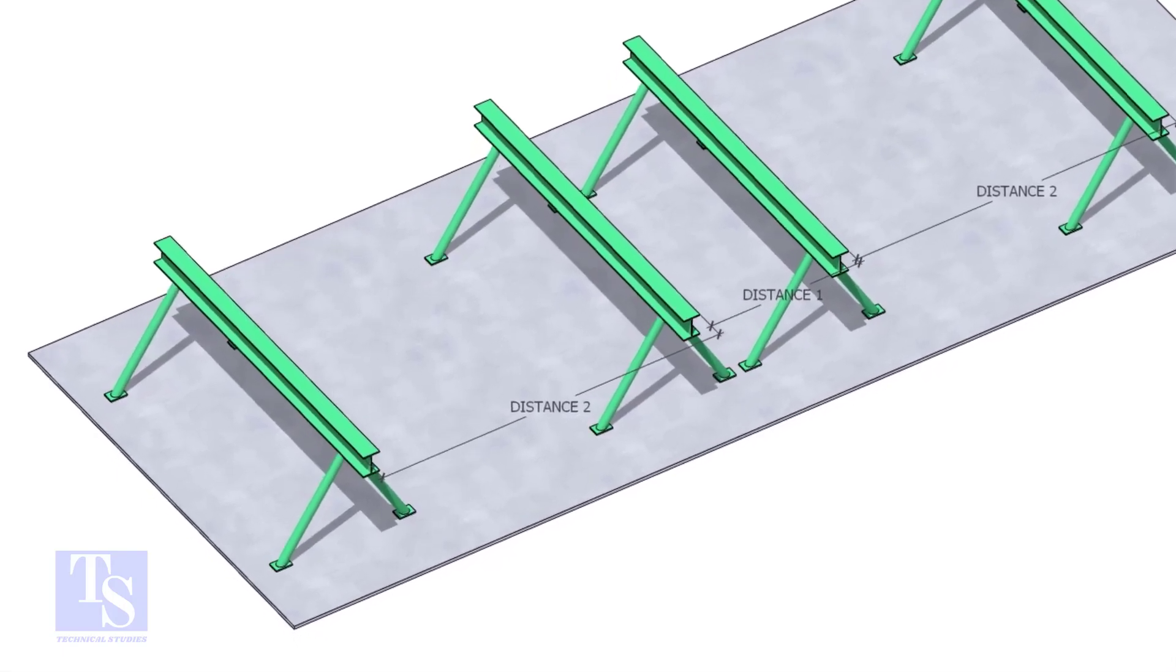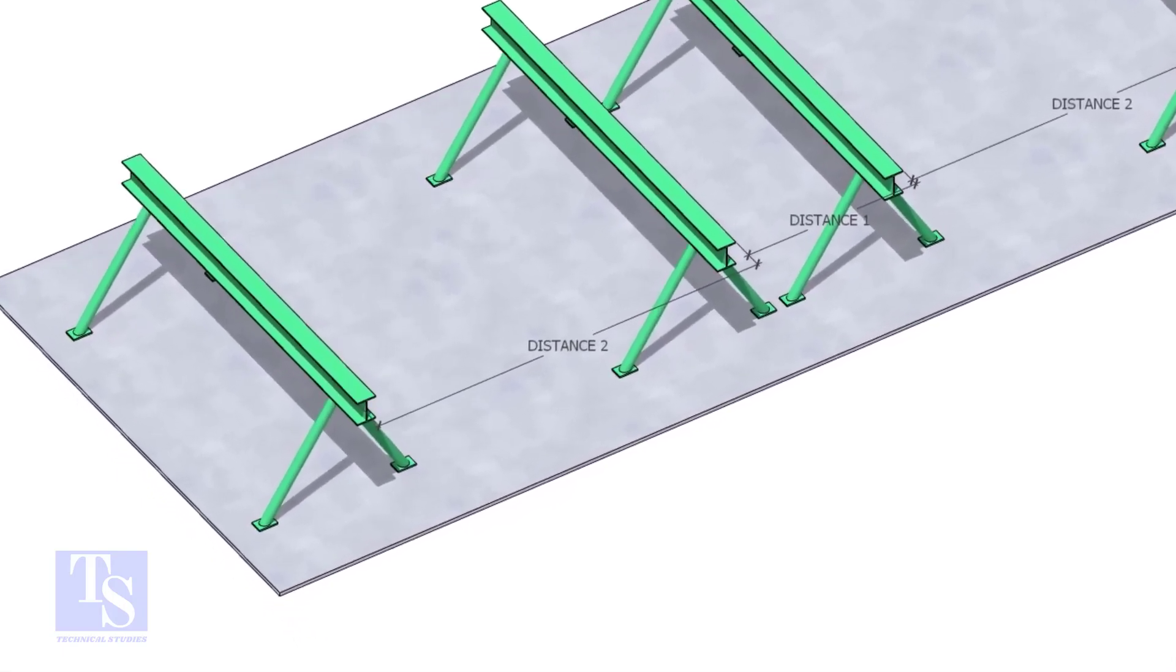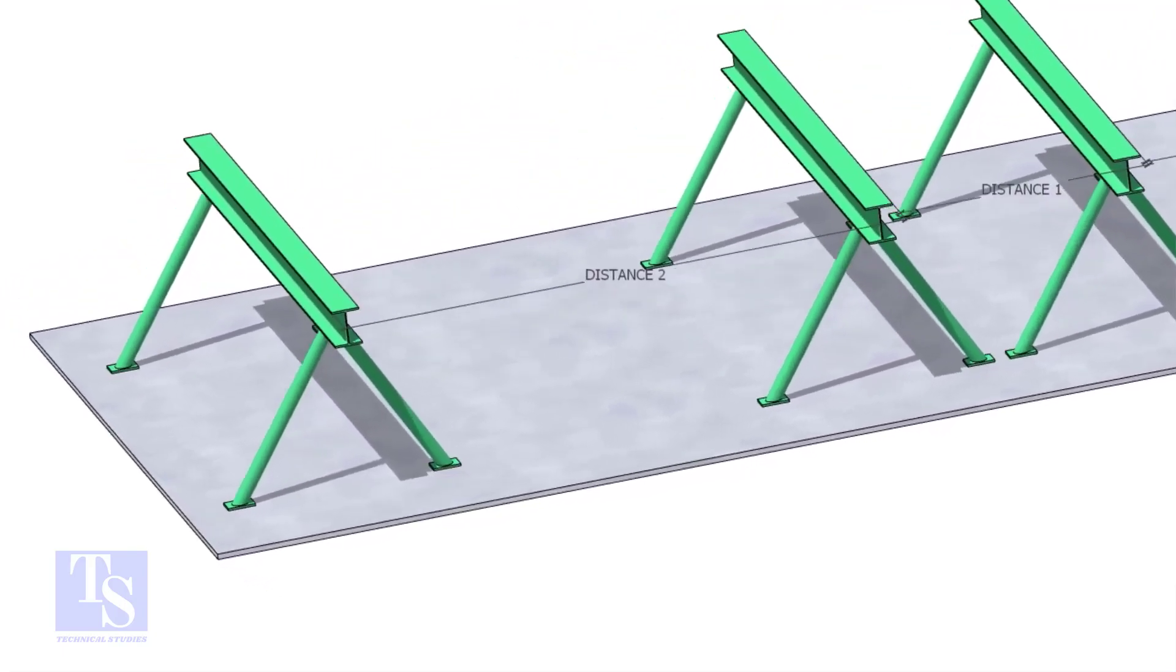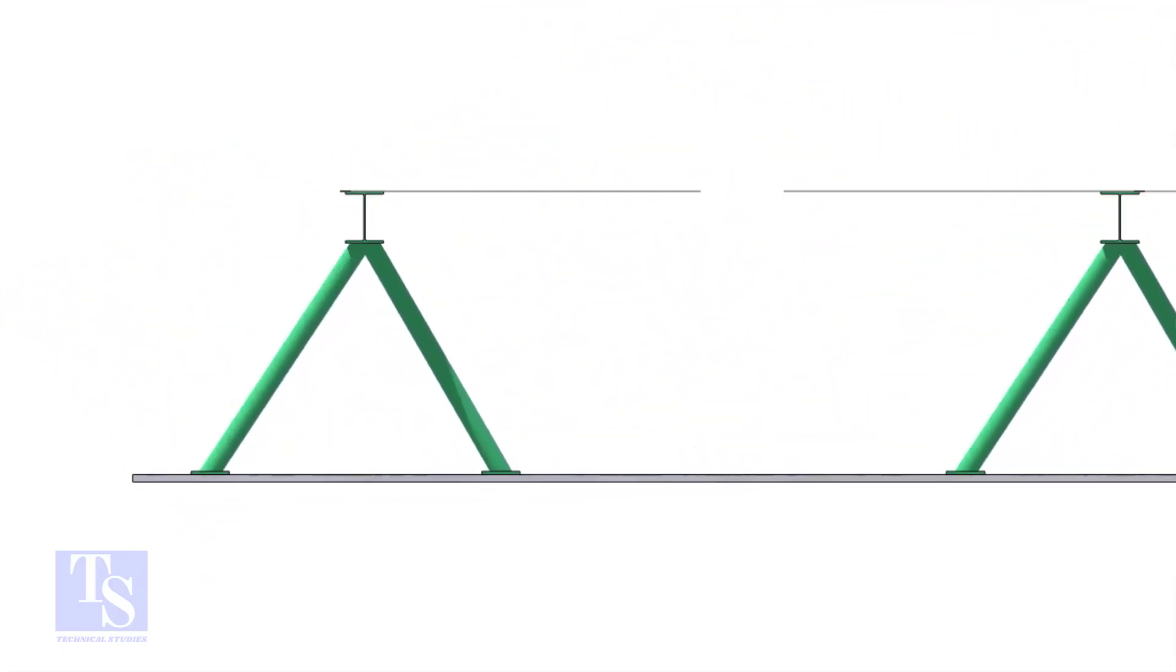Distance 1 shall be 1 meter to 1.2 meters. Distance 2 shall be 2 to 2.5 meters, less than the random pipe.